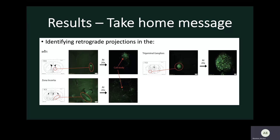In terms of retrograde projections, we saw them in the BNST, the ZI, and the trigeminal ganglion. The common factor between all of these images is a large cluster of cell bodies located in each of these areas, indicating they received the virus because they projected to the PBN. The trigeminal ganglion in specific sends sensory information to the PBN, so it makes sense that we see staining there, although we did not expect it.